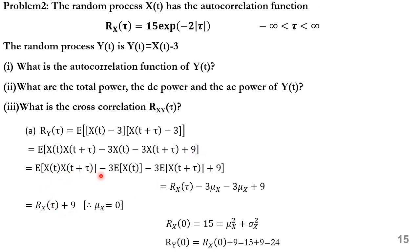Expanding: E[x(t)·x(t+τ)] − 3·E[x(t)] − 3·E[x(t+τ)] + 9 = R_x(τ) − 3μ_x − 3μ_x + 9. Since μ_x = 0, we get R_y(τ) = R_x(τ) + 9 = 16e^(−2|τ|) + 9. Then R_x(0) = 16, so R_y(0) = 16 + 9 = 25. Wait — R_x(0) = 16·e^0 = 16.